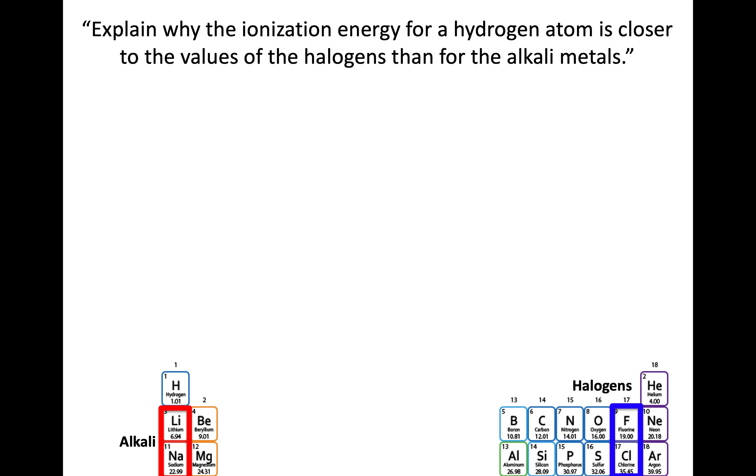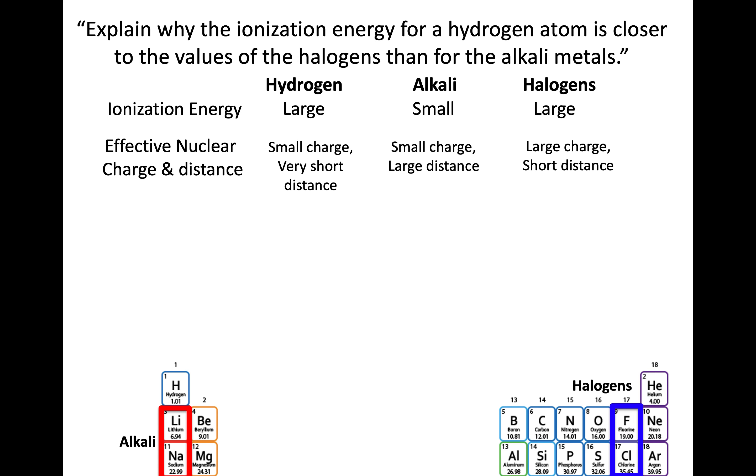Related to that, this is an open-ended question I've used several times: Explain why the ionization energy for a hydrogen atom is closer to the values for halogens than alkali metals. Experimentally, this is true. What's the explanation for that accepted fact? Here's my explanation thinking about hydrogen, alkalis, and halogens. First, when we say it's closer to the values, it's a large value for hydrogen, a large value for halogens, and a small value for alkalis. Considering effective nuclear charge and distance, hydrogen and halogens reach that large ionization energy in different ways.